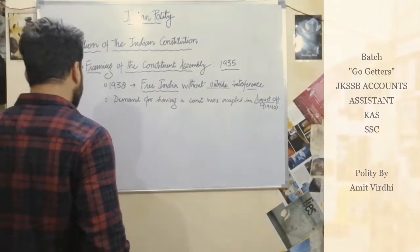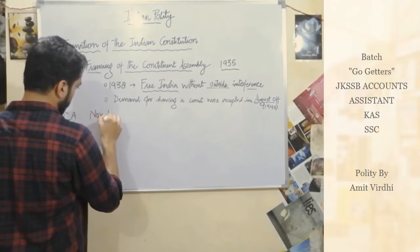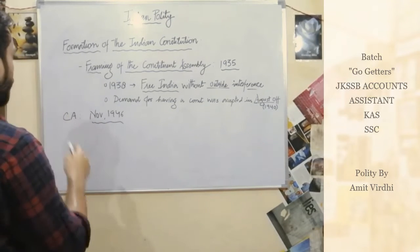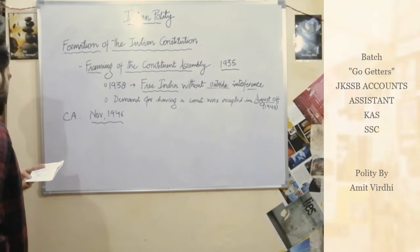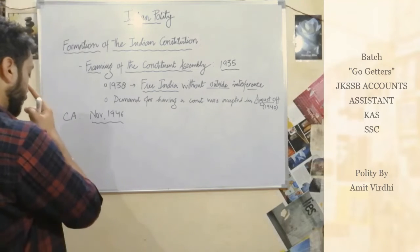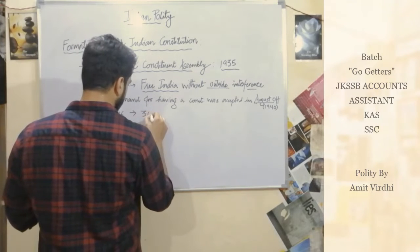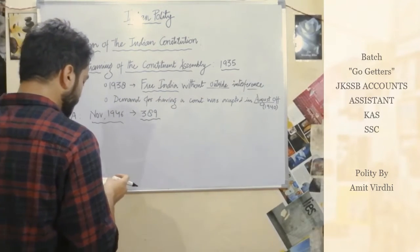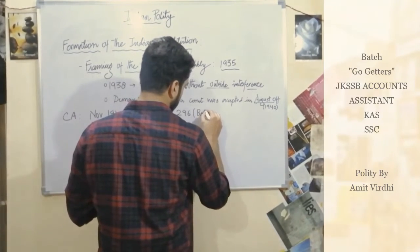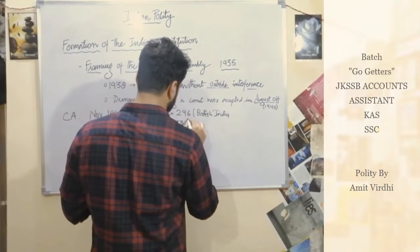If we talk about composition, our Constituent Assembly was constituted in November 1946. The process started in November 1946 when a formal body for framing the constitution was constituted. It was constituted under the scheme formulated in the Cabinet Mission Plan. The total members were 389: 296 from British India and the remaining 93 from the Princely States.